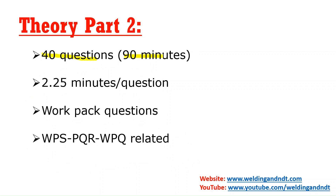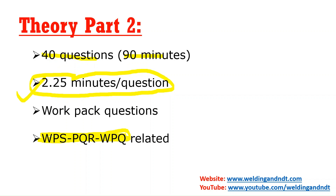In Theory Part 2, you will be given 40 questions and 90 minutes, meaning 2.25 minutes will be allotted for each question. Part 2 is a bit easier compared to Part 1 because Part 2 involves reviewing WPS, PQR, and WPQ which CSWIP will provide. If your concepts are clear, you can answer these questions quickly. From my point of view, Theory Part 2 and Practical are relatively easier than Theory Part 1.